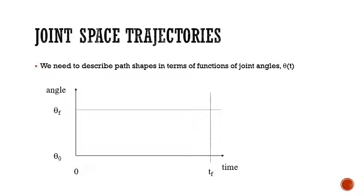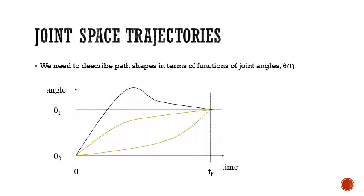The trajectory is basically, for every degree of freedom, a time-dependent position, velocity, and acceleration. So that is what we want to see for trajectory: the position, then the velocity, then the acceleration. You can also have the jerk, which is the rate of change of acceleration. But in our course, we are going to stick only until the acceleration.